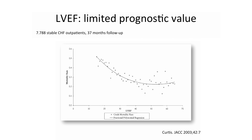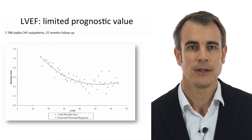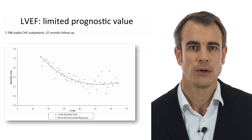As we are all aware, EF has limited prognostic value. You can see on this study that patients with a very low EF have a very bad prognosis, but this correlation is not clear in patients with only mildly reduced or normal ejection fraction. So really what you're saying is that if the EF is low they have a poor prognosis, but if the ejection fraction is normal...